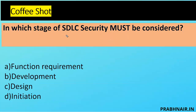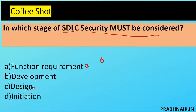Question: in which stage of the SDLC must security be considered? Option A is functional requirement, but that is the second stage. The first stage is initiation. Development comes even later — before development we have design and requirements. Design is where we design security, but that is based on functional requirements. According to best practice, security should be introduced as early as possible, so the answer is D.